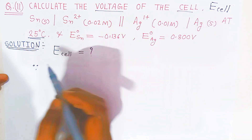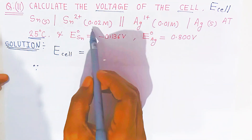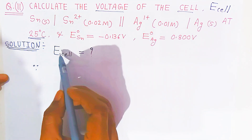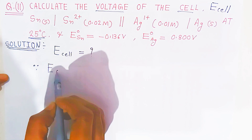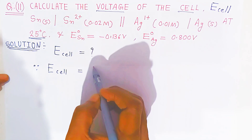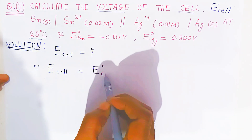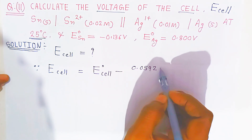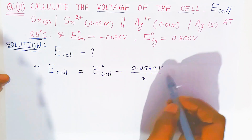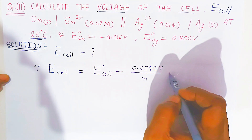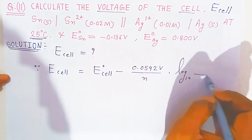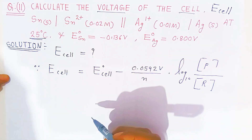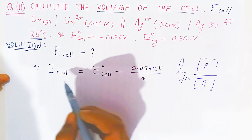Since we want to calculate the cell potential of this cell whose concentrations are 0.02 molar and 0.01 molar, we use the Nernst equation: E_cell = E°_cell minus (0.0592 / n) times log base 10 of the ratio of concentration of products upon concentration of reactants, where n is the number of moles of electrons transferred.